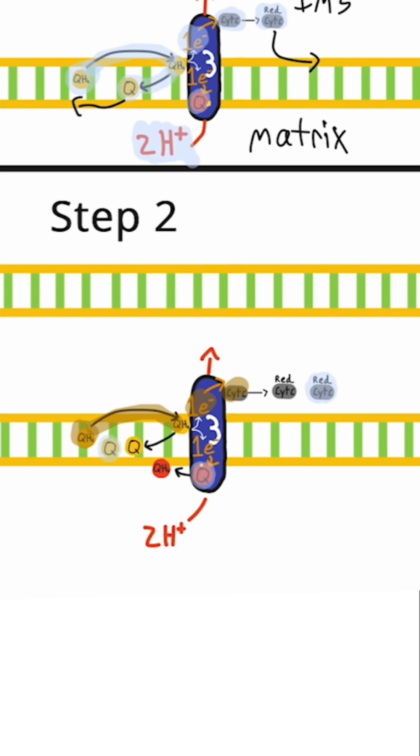One of those electrons reduces a second cytochrome C to create the second reduced cytochrome C, and that one will also move to complex 4 to transfer those electrons.